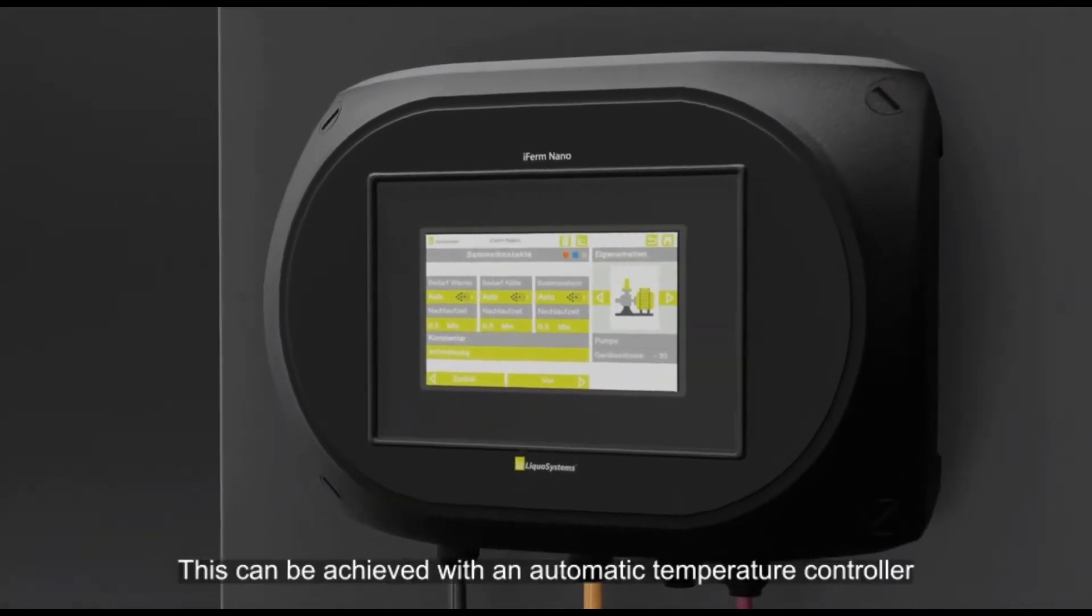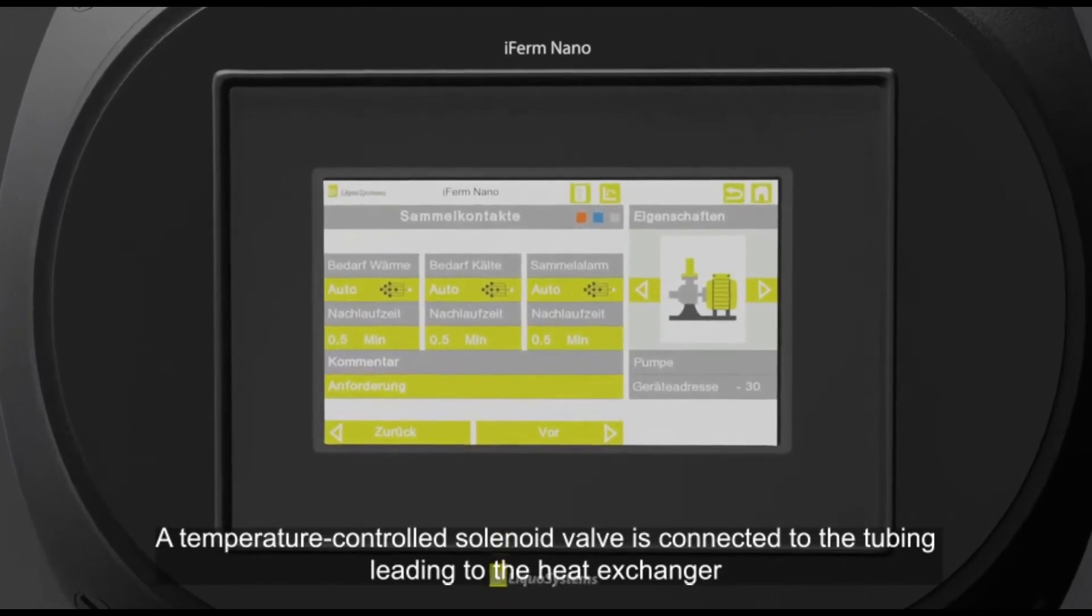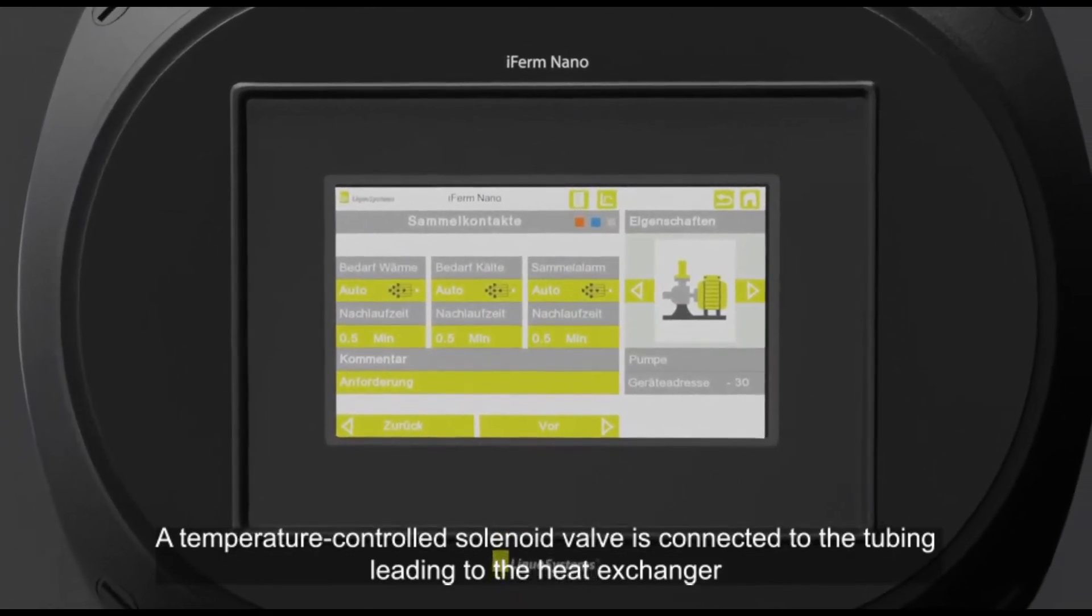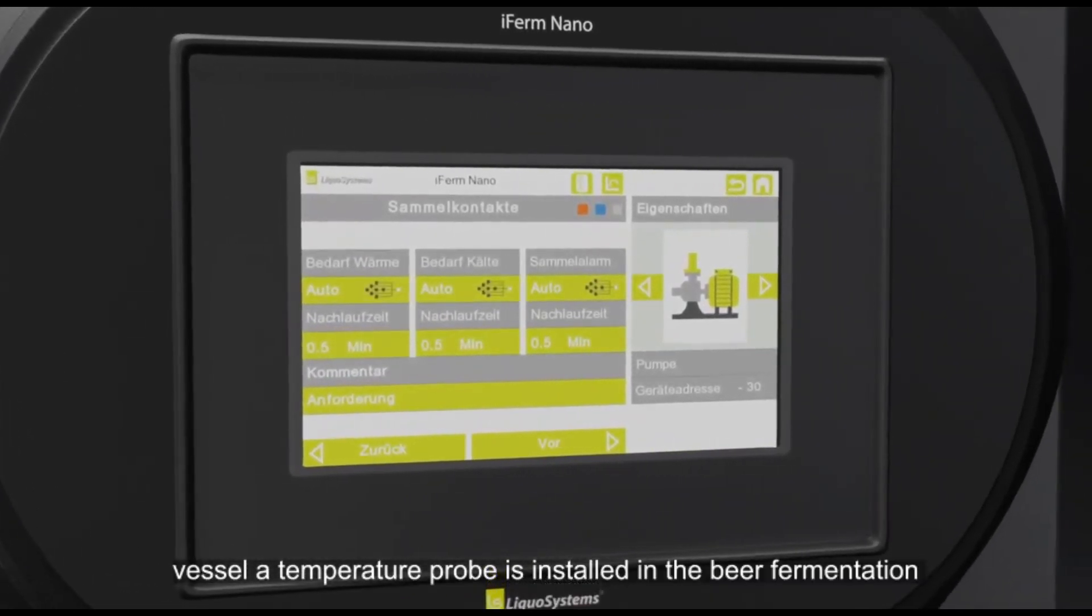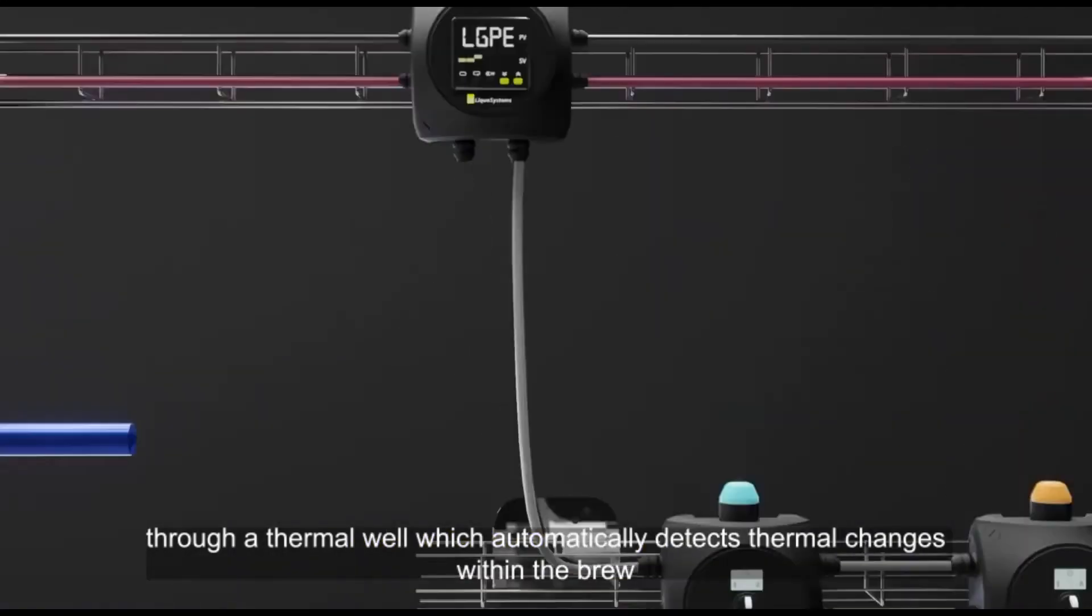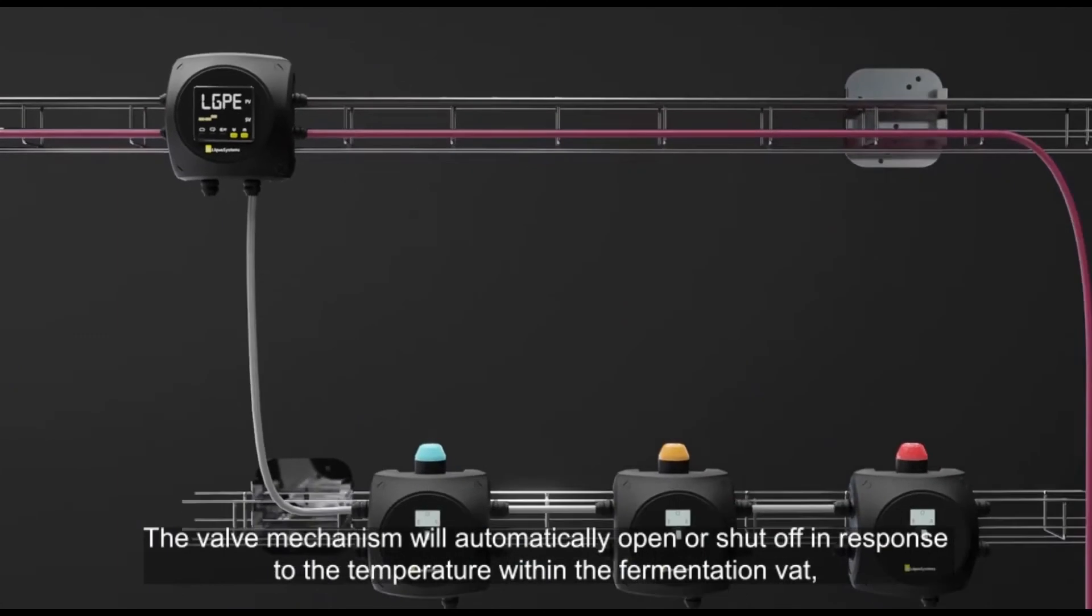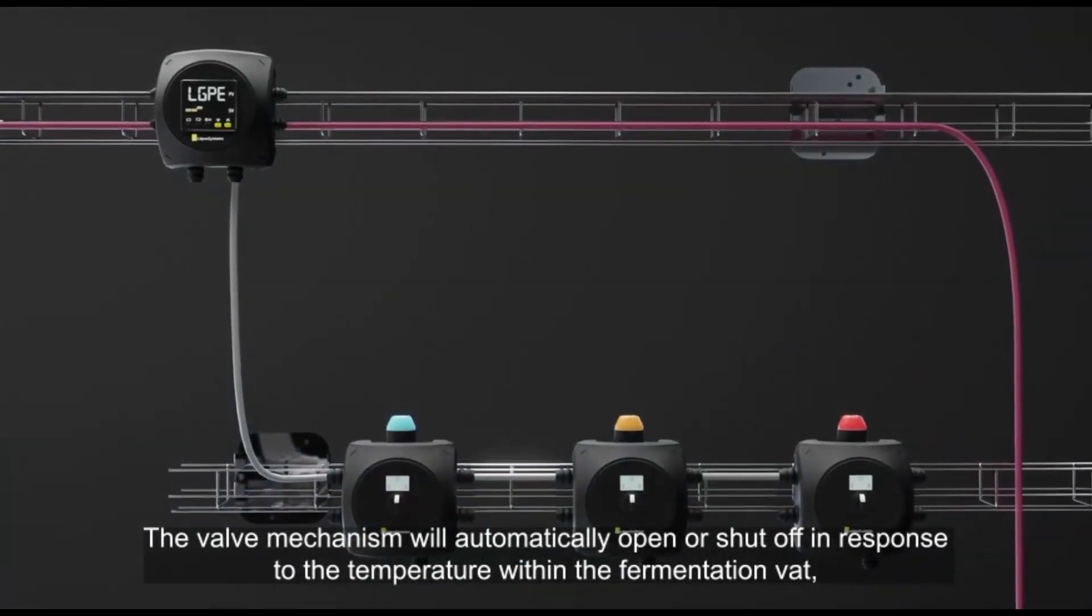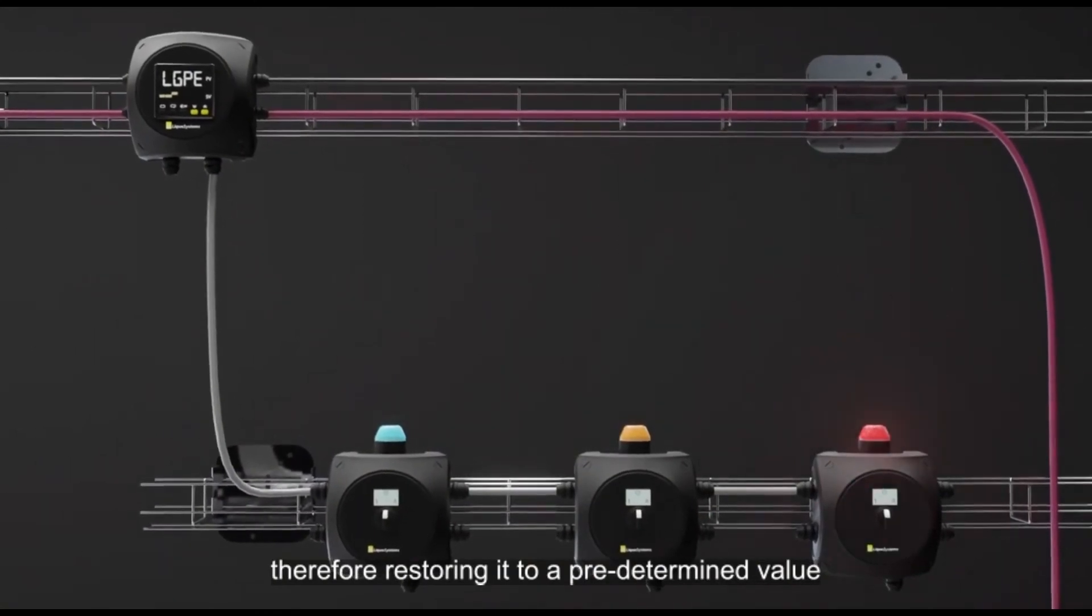This can be achieved with an automatic temperature controller. A temperature-controlled solenoid valve is connected to the tubing leading to the heat exchanger. Additionally, a temperature probe is installed in the beer fermentation vessel through a thermal well which automatically detects thermal changes within the brew. The valve mechanism will automatically open or shut off in response to the temperature within the fermentation vat, therefore restoring it to a predetermined value.